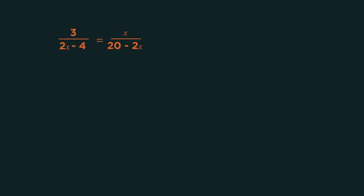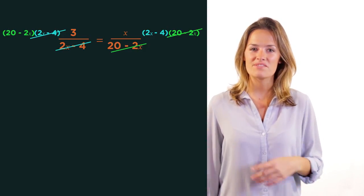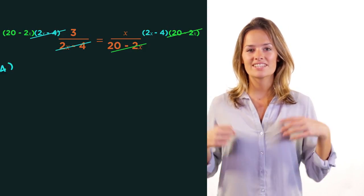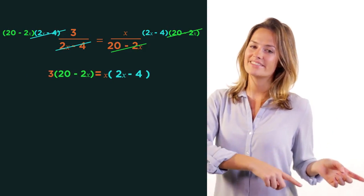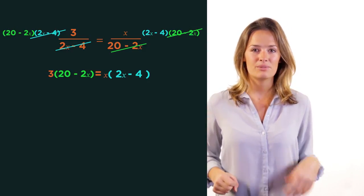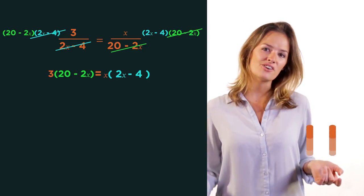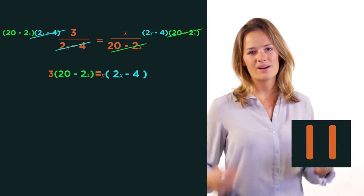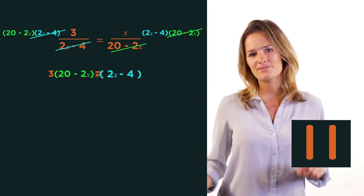So we start by multiplying up the 2x minus 4 and the 20 minus 2x to both sides. Can you carry on to solve the rest of the question? You'll have to collect everything together onto one side to make a quadratic which you can then factorize and solve. Pause the video, work out the answer, and click play when you're ready to check.